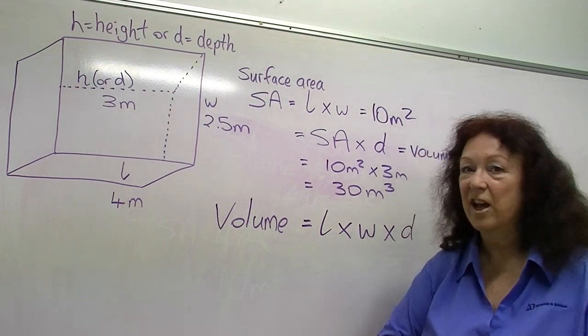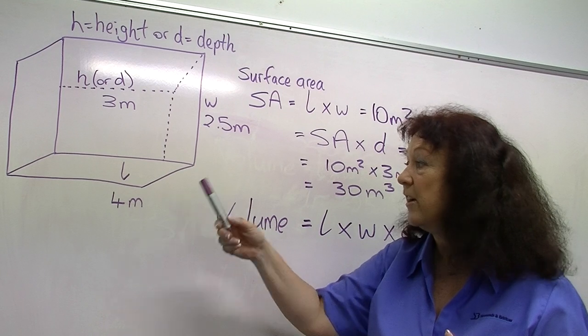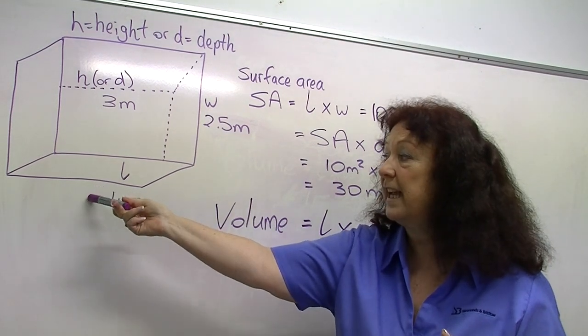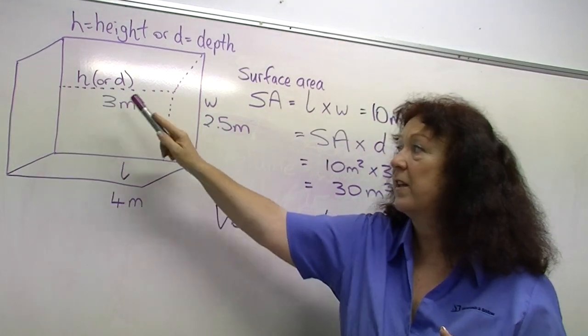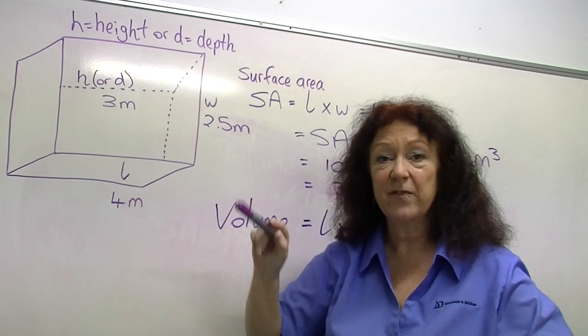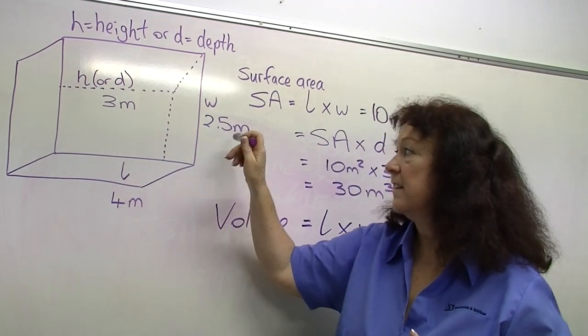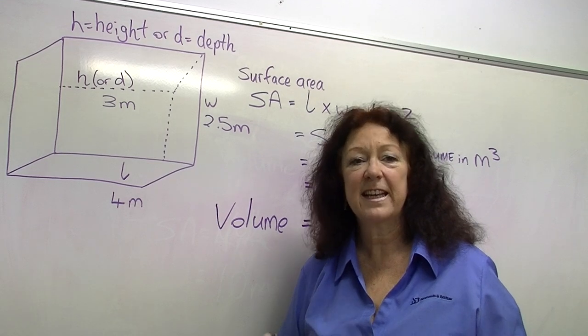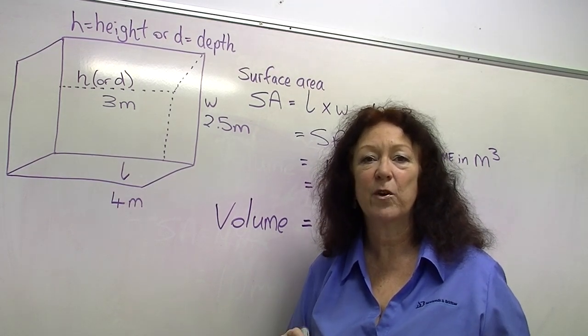So now let's start from scratch, as if we hadn't already worked that out, and we're just going to do length times width times depth to give us volume. Meters by meters by meters. That's going to give us cubic meters for our volume.